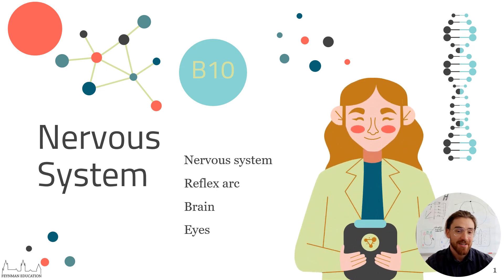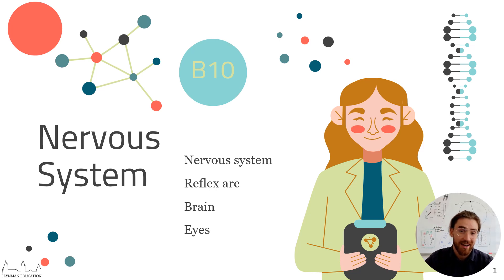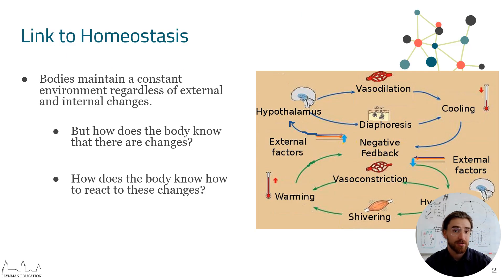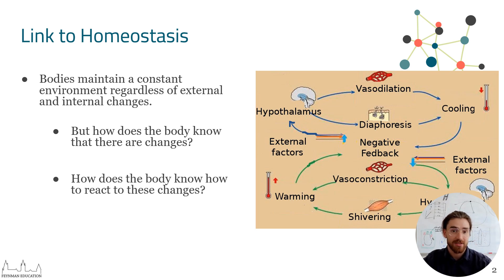Hi everybody, my name is Cameron and today we'll be looking at the nervous system, specifically the reflex arc, the brain and the eyes. The nervous system is also going to be a link to homeostasis. Most of the nerves in our body are there to try to keep the internal environment of our bodies as stable as possible, regardless of any external or internal changes.